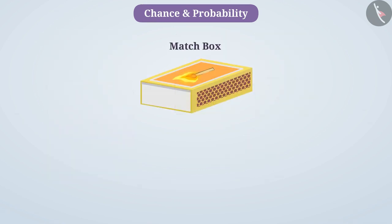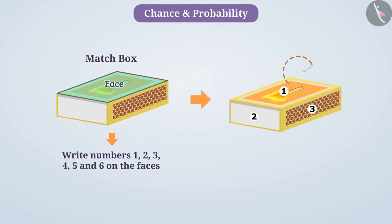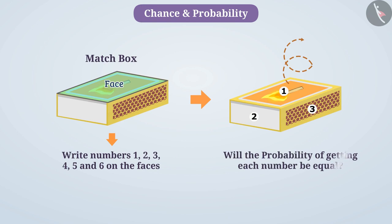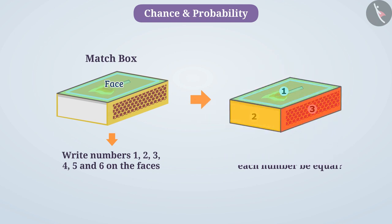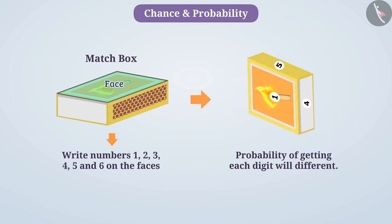Now imagine if we write numbers 1, 2, 3, 4, 5, and 6 on the faces of a matchbox and toss the matchbox — will the probability of getting each number be equal? Since the size of the faces of the matchbox are different, the probability of getting each digit will also be different. Therefore, here the outcomes cannot be equally likely.